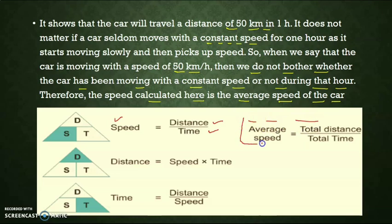During a journey, the speed of the car may increase from 50 km per hour to 60, or decrease from 50 to 40. But whenever we calculate speed, we take the total distance and total time, and this gives the average speed of the object. We can also write the formula in another way: distance is equal to speed multiplied by time, and time is equal to distance divided by speed. These are the same formula represented by different physical quantities.